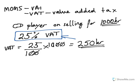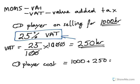You've also got to pay for the CD player. So the amount that you would pay for your CD player including VAT would cost you 1,000 plus 250, equals 1,250 kronos.